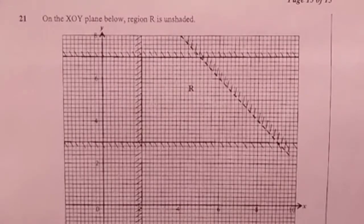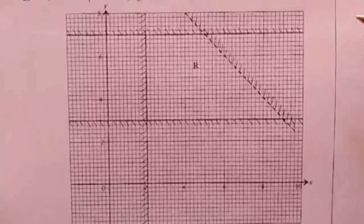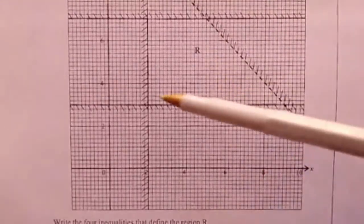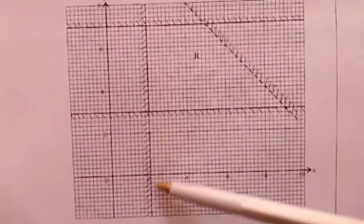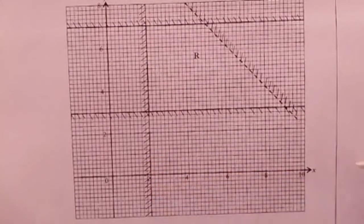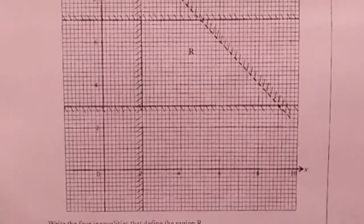I am going to start with the vertical and horizontal lines. We have this first line, this vertical line here, which is passing through the value of X which is equal to 2. We are going to attack this in two stages. The first stage is to identify the equation of the line.